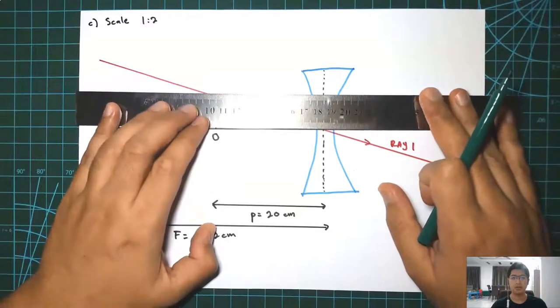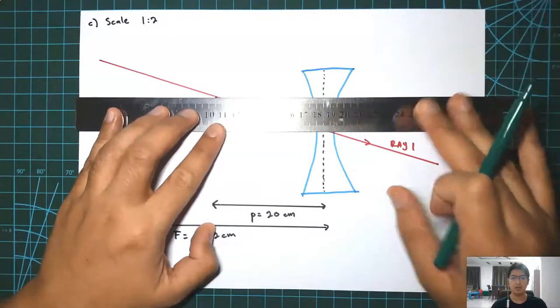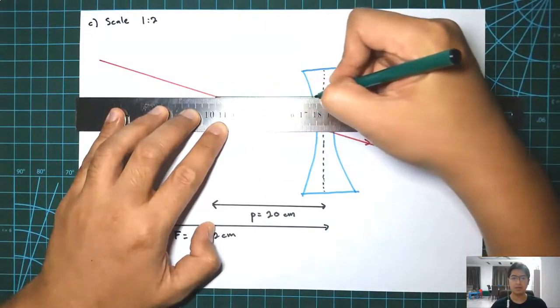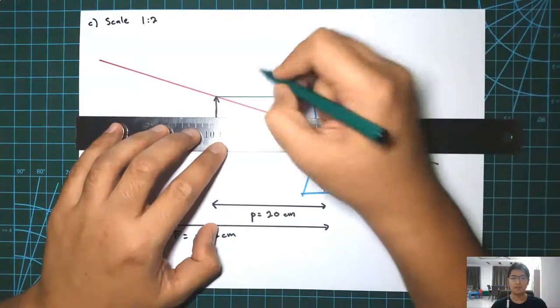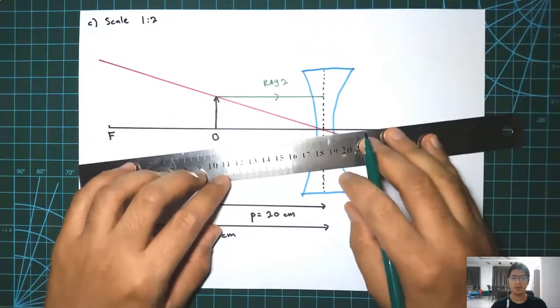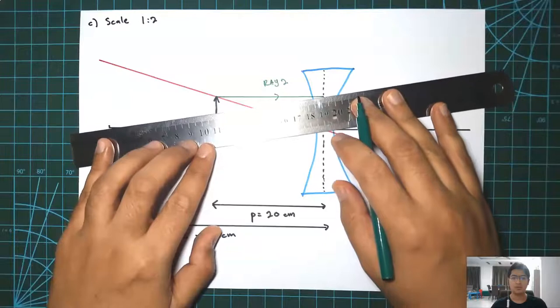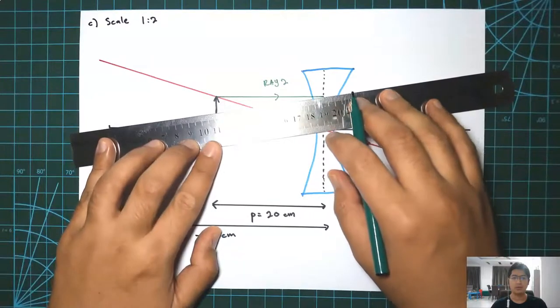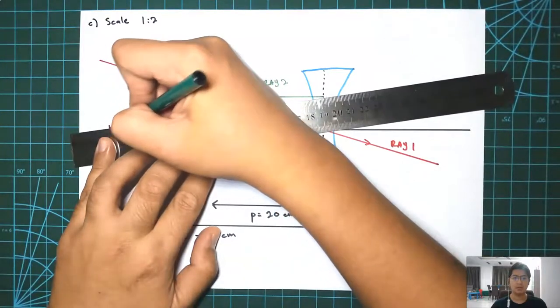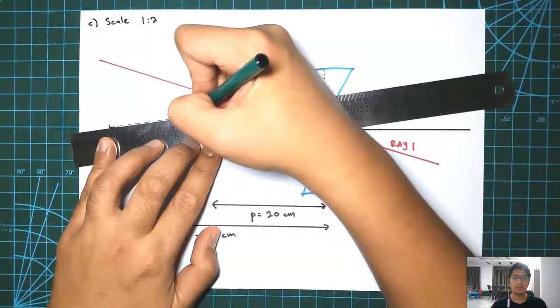The second ray from the head of the object straight and parallel, straight to the lens and parallel with the principal axis. And then you need to refer to the focal length. The light must look like it originated from the focal point.